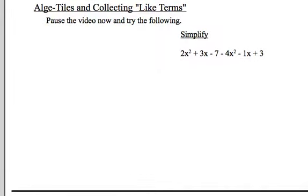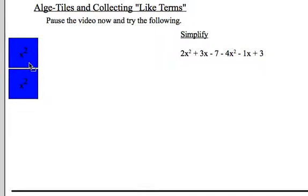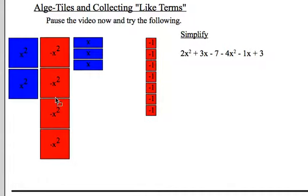So here we go. 2x squared, again, represented by the largest of the algebra tiles. Positive, so they're blue. 2 plus 3x minus 7. So there's the first 3 terms. Minus 4x squared, so 4 of those tiles. Minus x, so I need 1 of these. And plus 3.